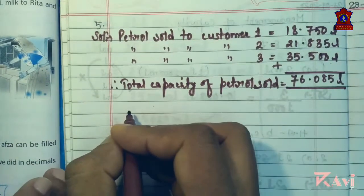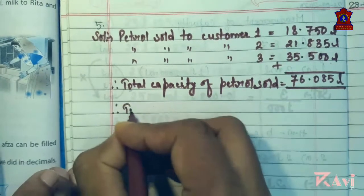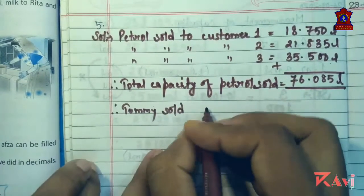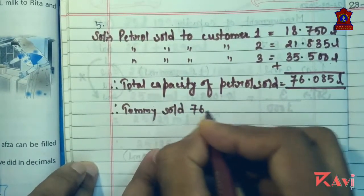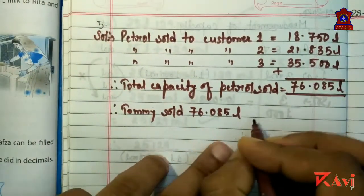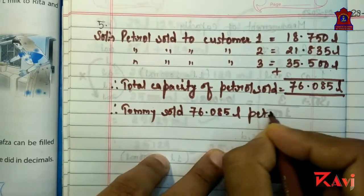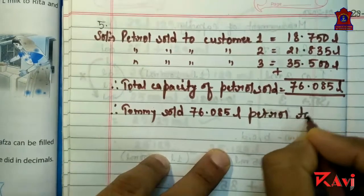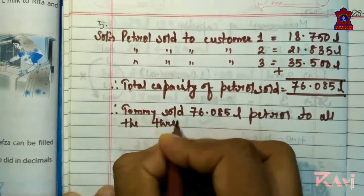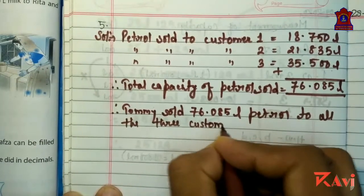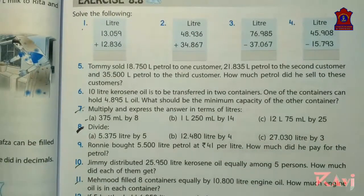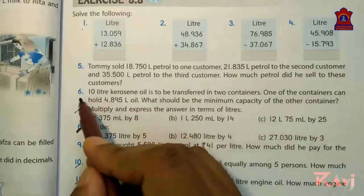We will write the answer statement. Therefore, Tommy sold 76.085 litres of petrol to all three customers. Like this, you have to solve question number 6 also.